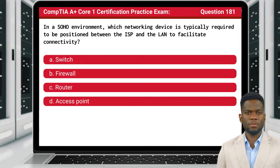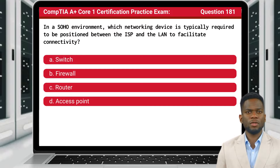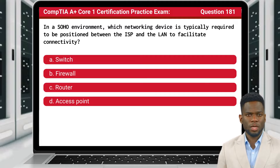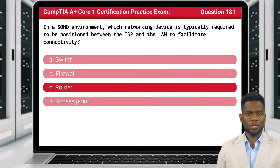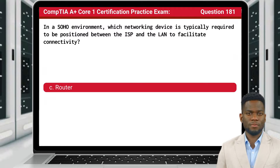Question 181. In a SOHO environment, which networking device is typically required to be positioned between the ISP and the LAN to facilitate connectivity? The answer is C, router.